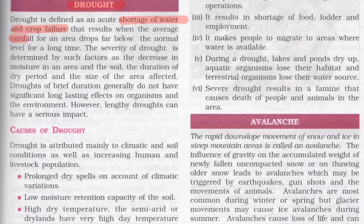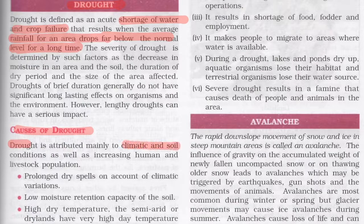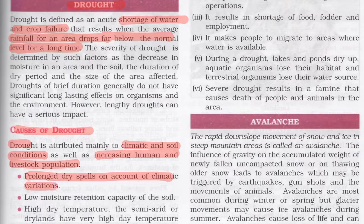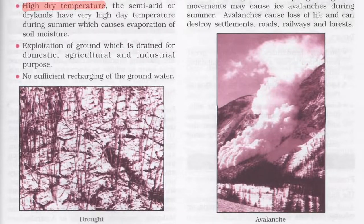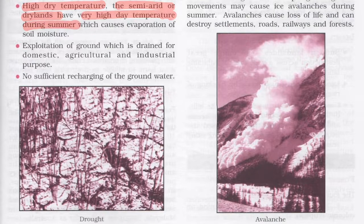Drought is defined as a shortage of water and crop failure that results when the average rainfall of an area drops far below normal for a long time. Drought is mainly attributed to climate and soil conditions, increasing human and livestock populations, prolonged dry spells due to climatic variations, and low moisture retention capacity of the soil. High dry temperatures in semi-arid lands cause evaporation of soil moisture.